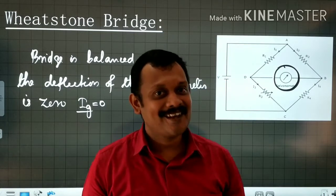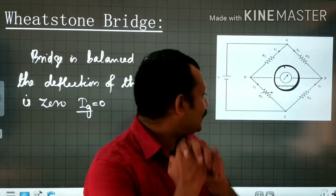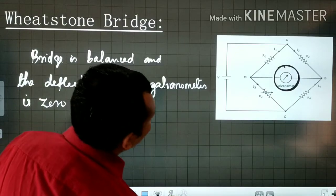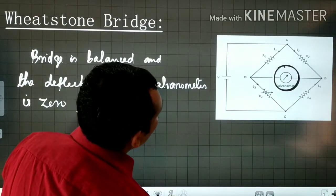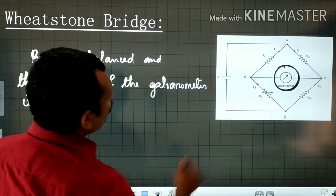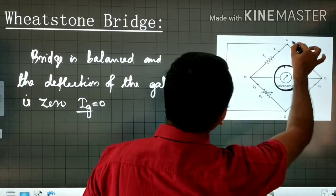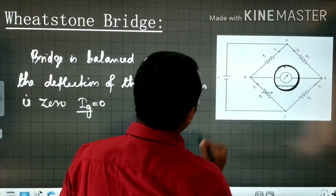When Ig is zero, we say the Wheatstone Bridge is balanced. That means Ig is equal to zero.